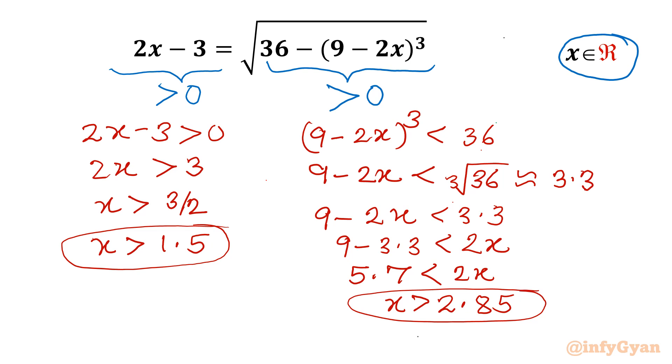Now I have to consider the intersection of both conditions. Using a number line, you will get the result x greater than 2.85. So only solutions which are exceeding 2.85 would be the accepted solution for real numbers.